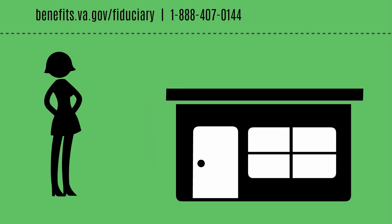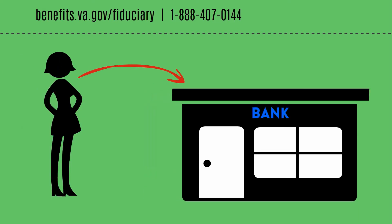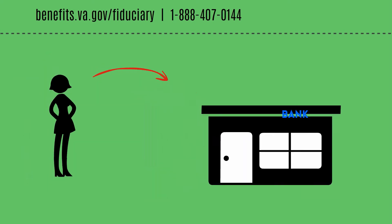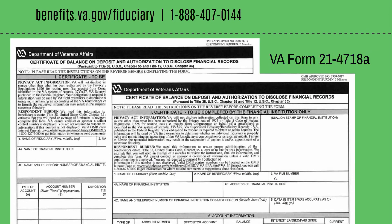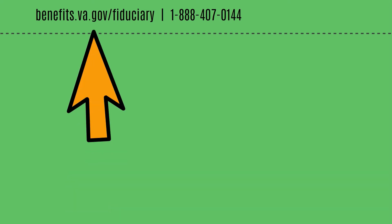Next, you'll need to go to the financial institution where the VA funds are deposited and have the bank complete their portion of the VA Form 21P-4718A with all bank accounts and balances. If the funds are in multiple banks, you'll need to complete multiple forms. You can find additional copies of this form at our website.